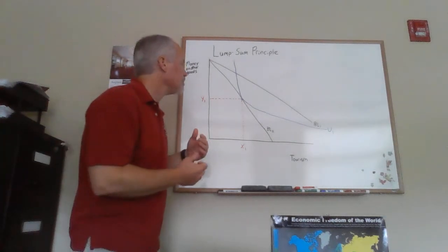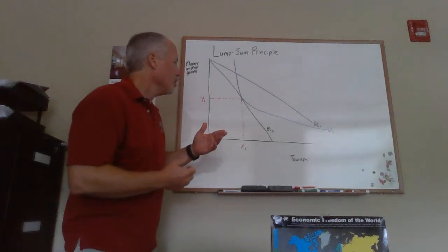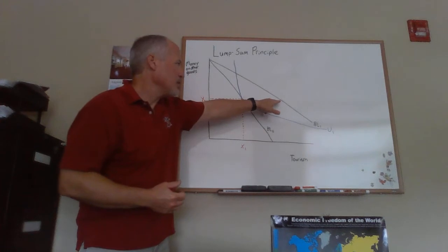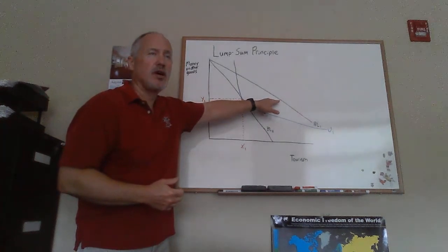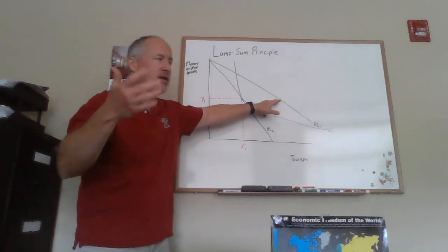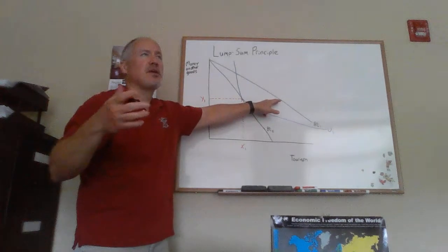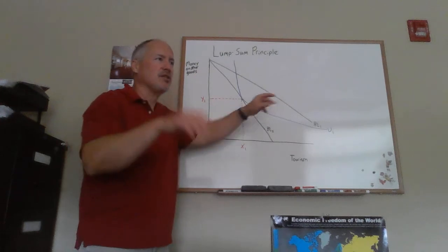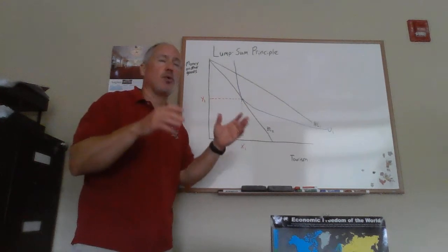What we're drawing here is an initial budget line a person would have before the government imposes any tax. We're not that concerned with that because that was the status quo or the situation before we have taxes. We're going to compare two different taxes, so I haven't drawn an indifference curve for that.